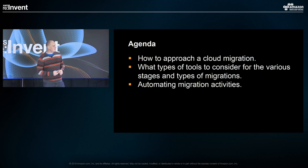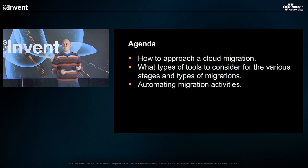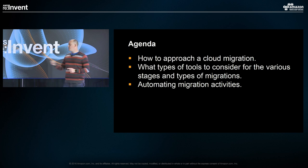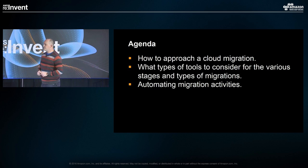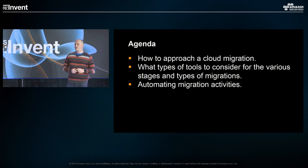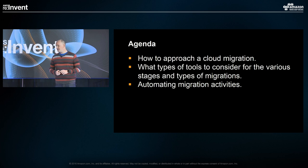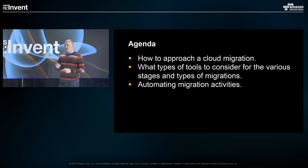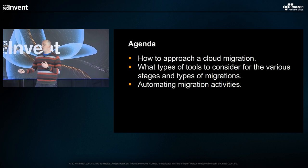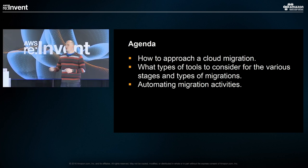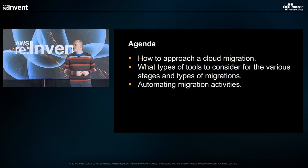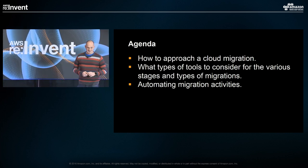My name is Mundus. I'm a partner solutions architect focusing specifically on the migration competency within our partners. I come from a big data background in DevOps. Carmen is my counterpart — he's based out of New York, I'm based out of Seattle. We're tasked with discovering and emerging migration patterns with our customers and working with our partners to help them build tools for those patterns. We'll be ad-libbing between each other, so if we interrupt one another, we're not rude — that's just how we are.